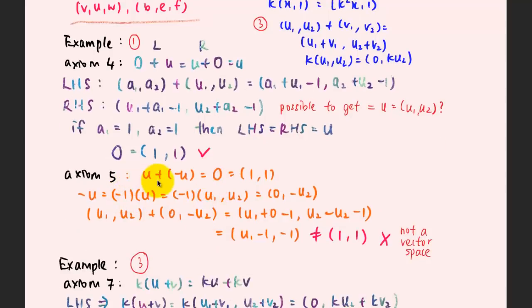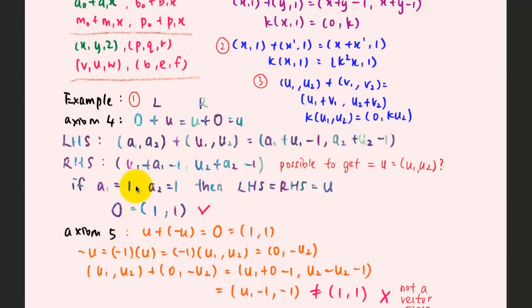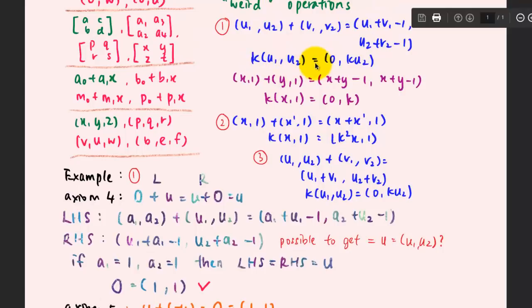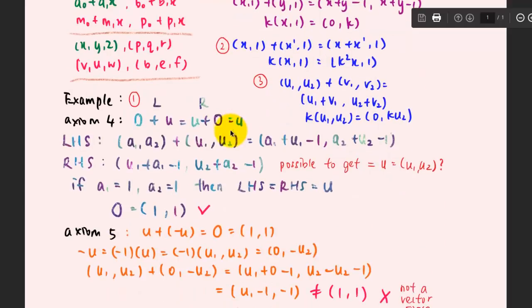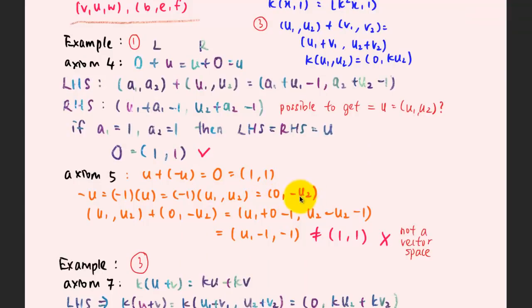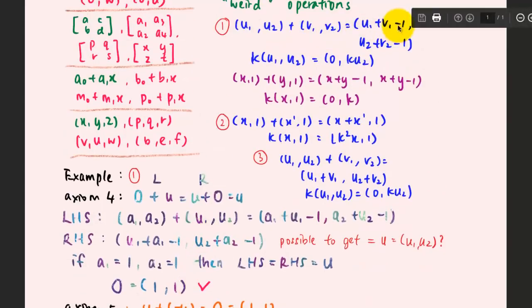For axiom 5, u plus negative u must equal the zero vector 1, 1 that we found. The negative u is the multiplication of negative 1 with u. Since this involves multiplication, we follow the scalar multiplication rule: the first entry is always 0, and the second entry is the normal multiplication — so negative 1 times u2 gives 0 and negative u2. Then we add u1, u2 plus 0, negative u2 using the weird addition rule: u1 plus 0 minus 1 and u2 minus u2 minus 1.